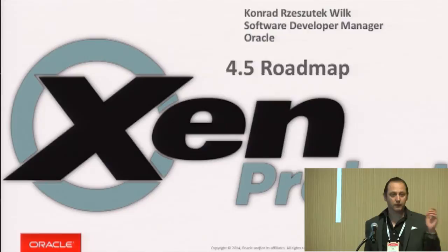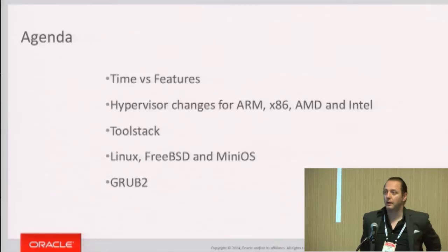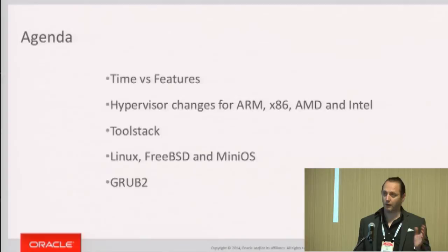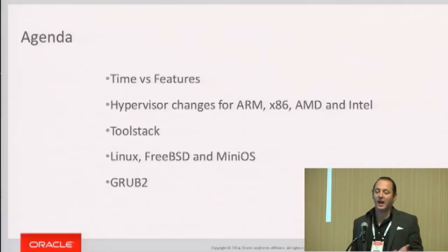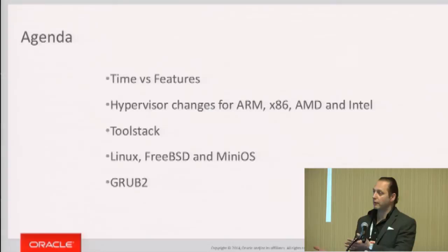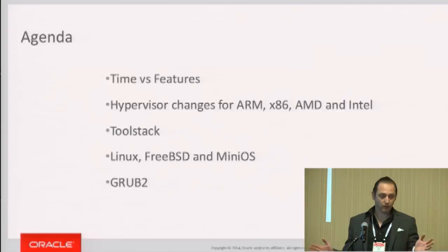After me is David — he's going to talk about the Linux part. My name is Conrad, I work for Oracle as a software development manager. At Oracle, even managers still have to code. In the past I was a Linux Xen subsystem maintainer — I used to maintain the Xen subsystem in Linux with Jeremy Fitzhardinge. I've passed that on to David Vrabel and Boris Ostrowski, and I'm now focused on adding stuff in Xen.